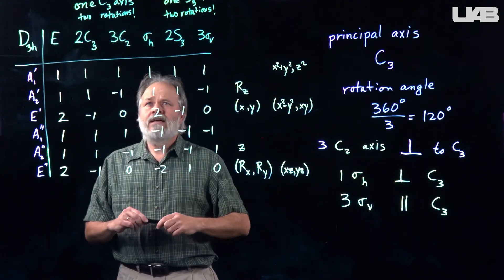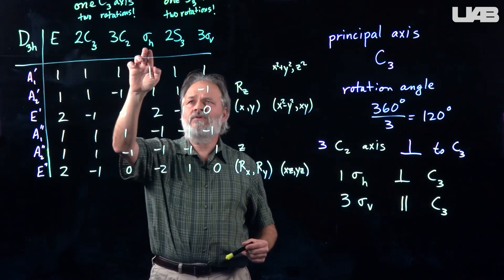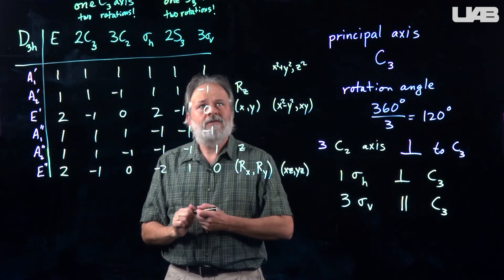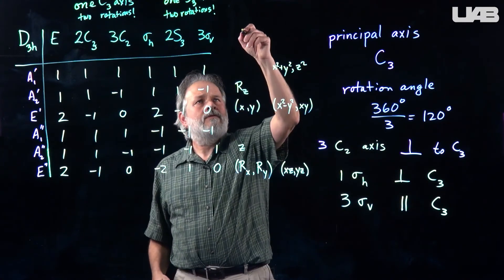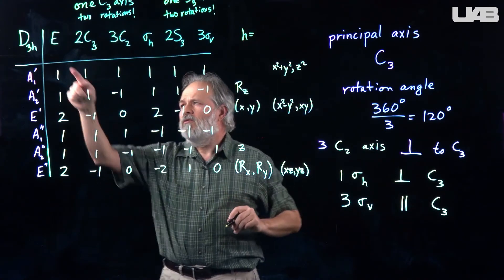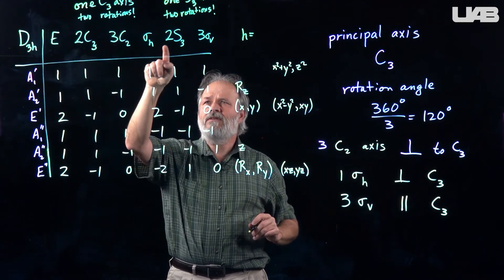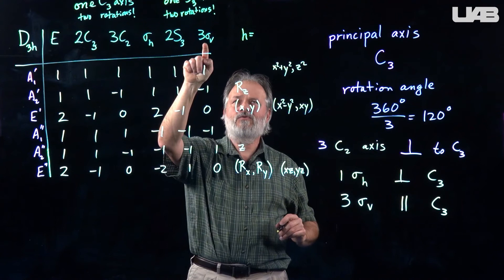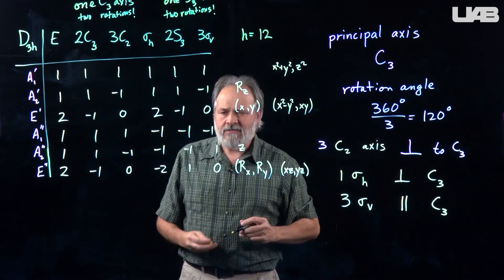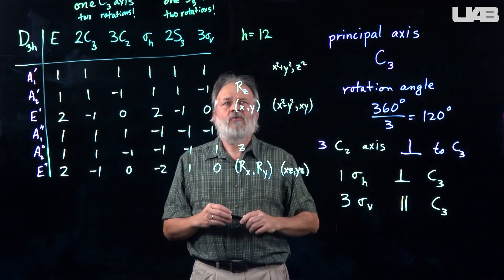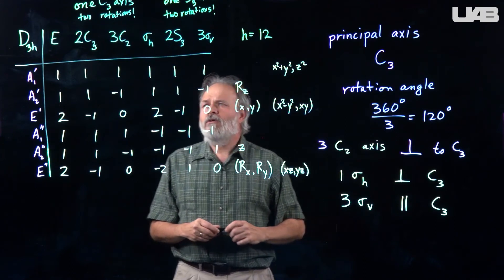So, it turns out that when you count all the numbers of operations, you get something called the order of the group. And so, one, two, three, four, five, six, seven, eight, nine, ten, eleven, twelve. There are twelve operations in the D3H point group, so it's called the order of twelve.